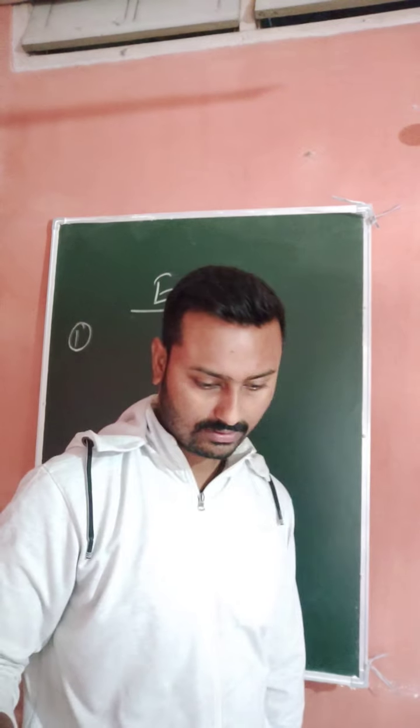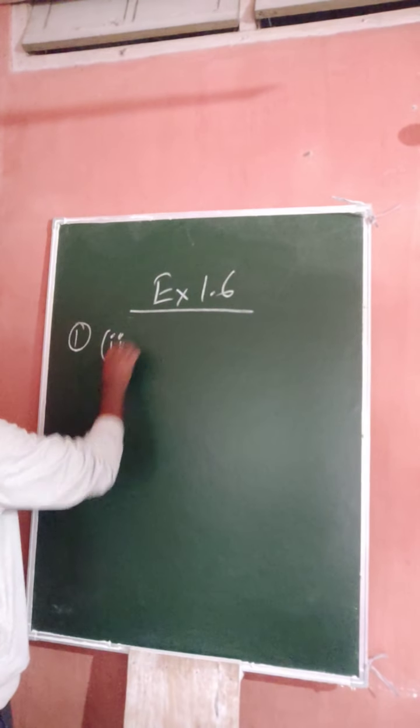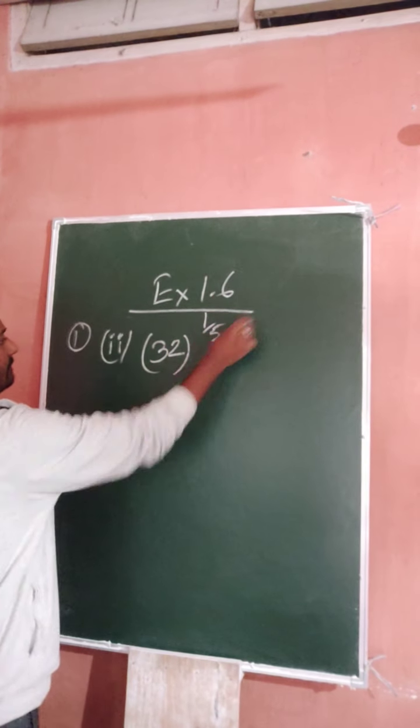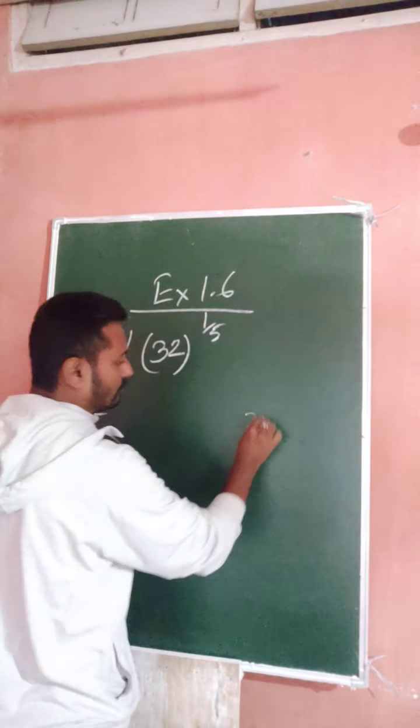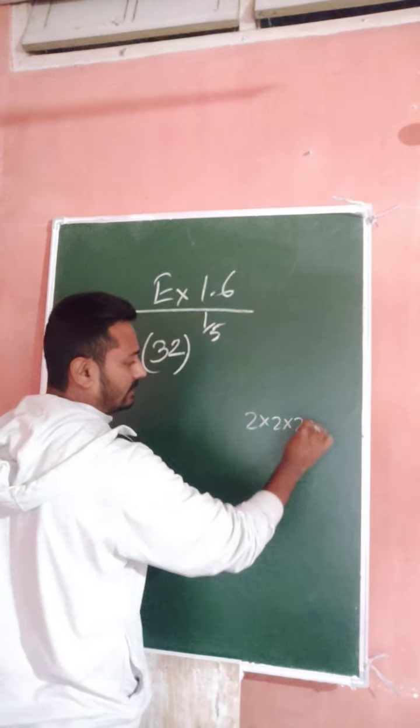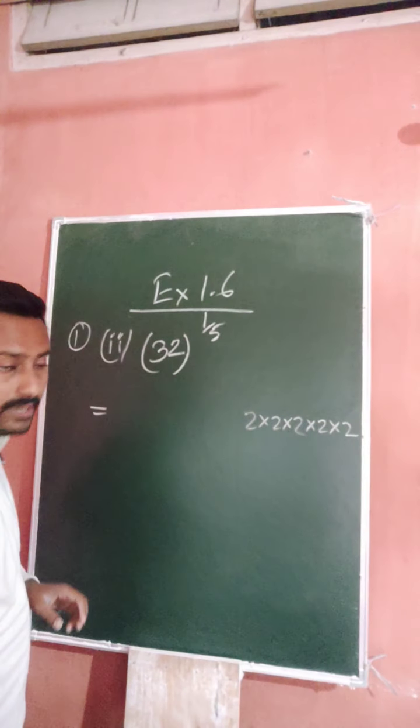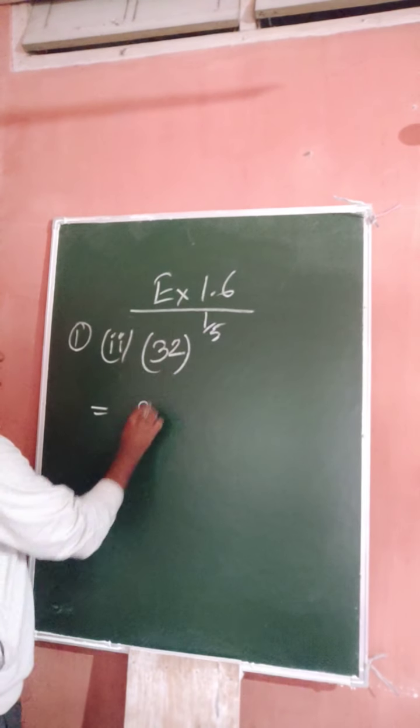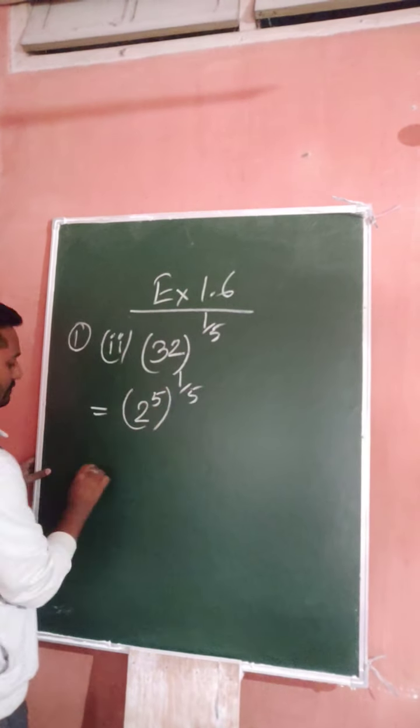Now come to question number two. Question number two is 32 whole to the power one by five. So 32 you can write as 2 to the power 5. Two into two is four, two times two is eight, eight into two is sixteen, sixteen into two is thirty-two.